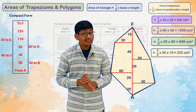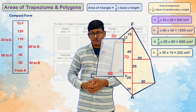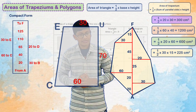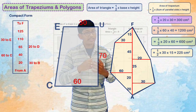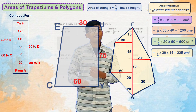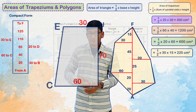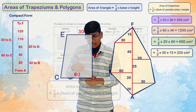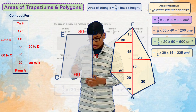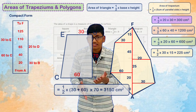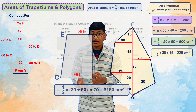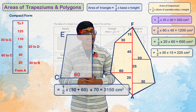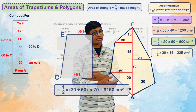The triangle part is over but the trapezium part is still left. For the first trapezium, the two parallel sides are 60 cm and 30 cm, and the height is 70 cm. Half into sum of parallel sides (60 plus 30 = 90 cm) into height 70 cm gives 3150 cm².